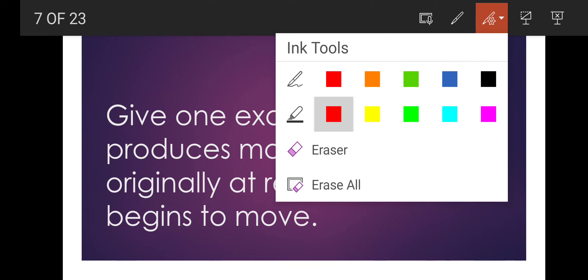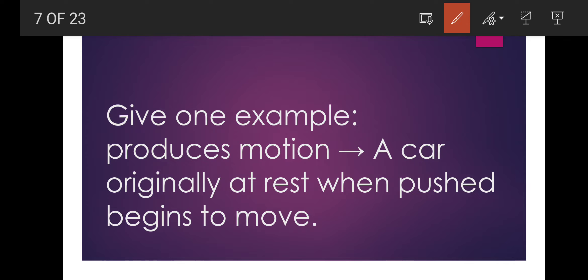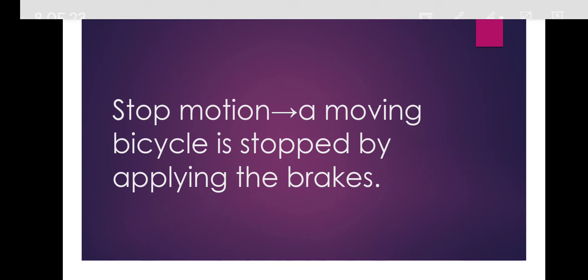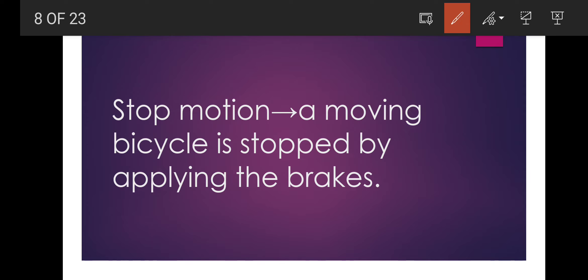Give one example each to indicate that the application of a force produces motion. The best example is: a car originally at rest, when pushed, begins to move. Next, for stop motion, the best example is: a moving bicycle is stopped by applying the brakes.